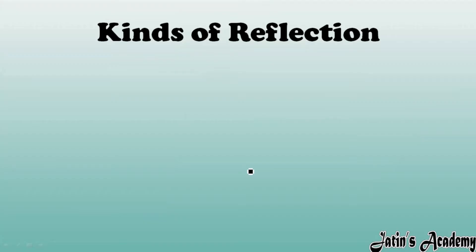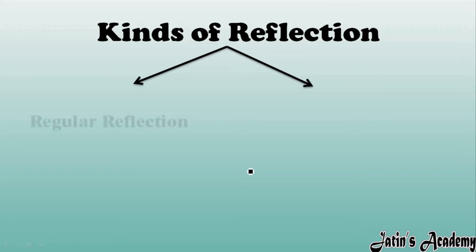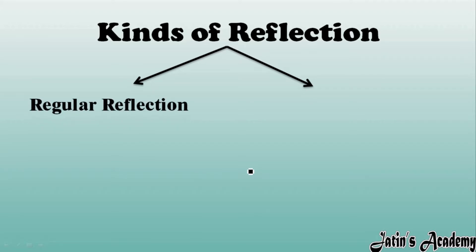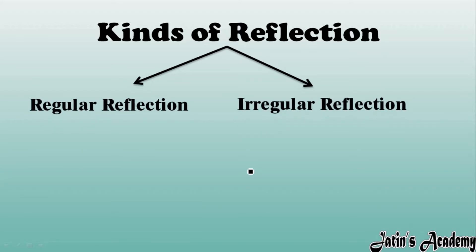We are having two kinds of reflection. First, we are having regular reflection, and second, we are having irregular reflection. One by one we will study what is regular reflection and what is irregular reflection.